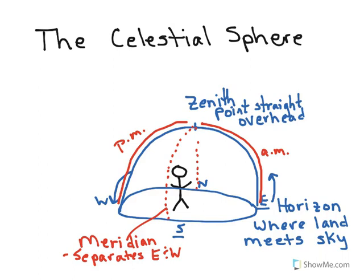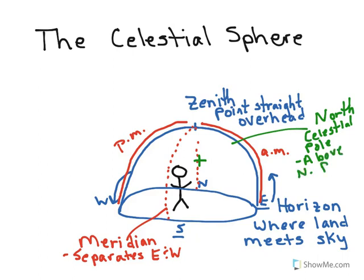The next point in the sky we're going to look at in our celestial sphere is very dependent on your location north and south. This represents what's called the north celestial pole, and this is the point above the north pole. Where I've drawn it is for relatively mid-northern latitudes. How high up the north celestial pole is depends on how far north you are. The farther north you live, the higher up the north celestial pole is. The farther south you live, the lower it is.